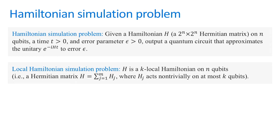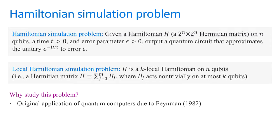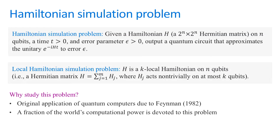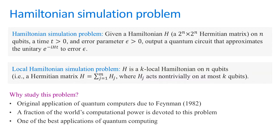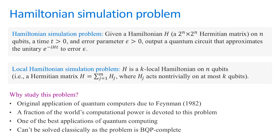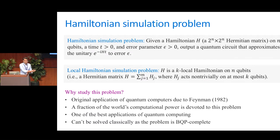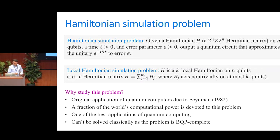Why should we study this problem? This was the original application of quantum computers back when Feynman proposed this. More interestingly, a fraction of the world's computational power is devoted to solving this problem today on classical machines. It's still one of the best applications of quantum computing — when people ask what we'll do with large quantum computers, this is something we can really do that's useful and interesting. And this problem is complete for the complexity class BQP — if there were a classical polynomial-time algorithm, every problem solvable by a quantum computer could be solved classically, which would give polynomial-time classical factoring. We don't think that's going to happen.